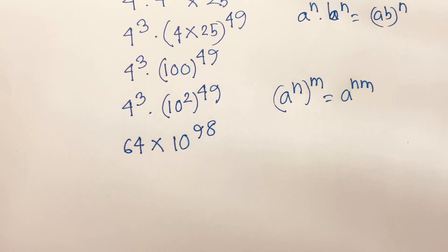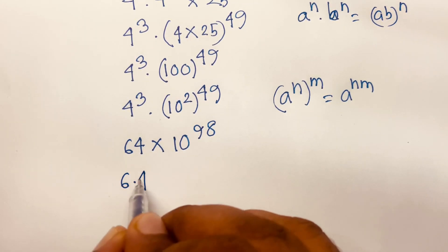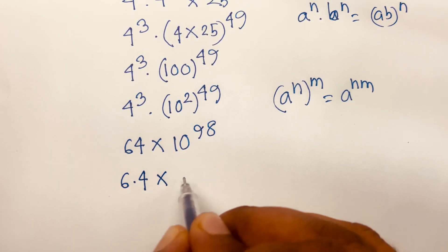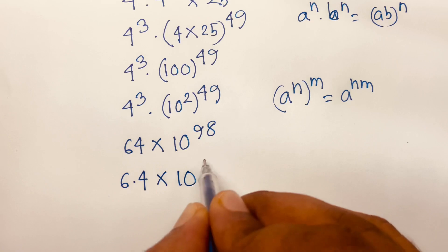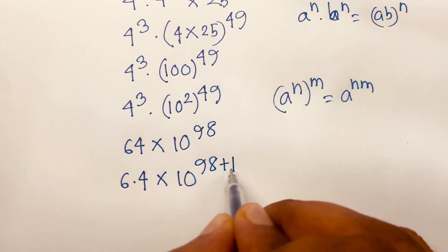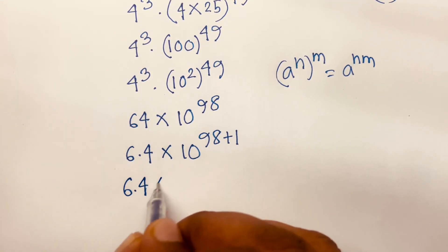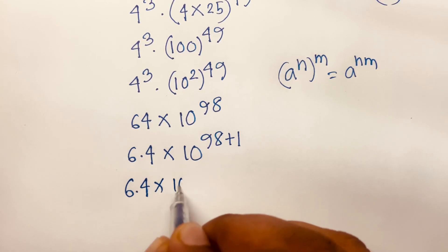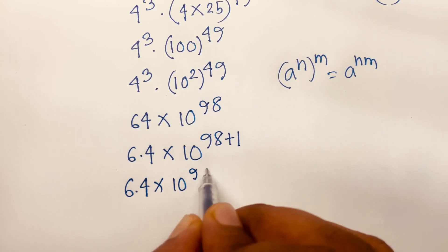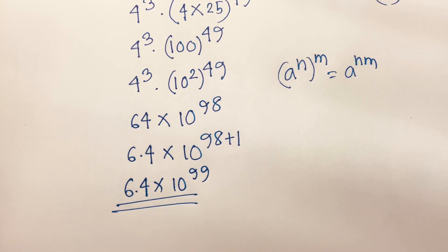So the expression becomes 6.4 times 10 to the power 98 plus 1, which gives us 6.4 times 10 to the power 99. This is our final answer.